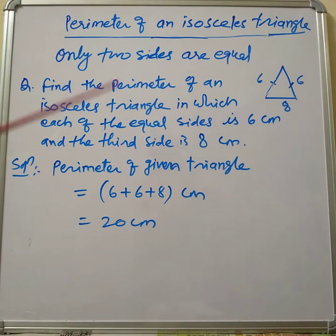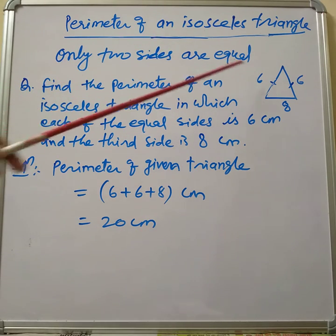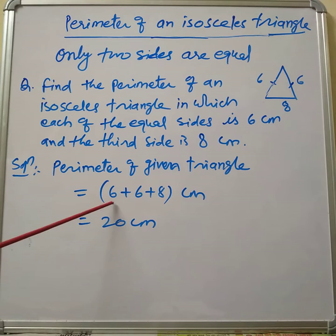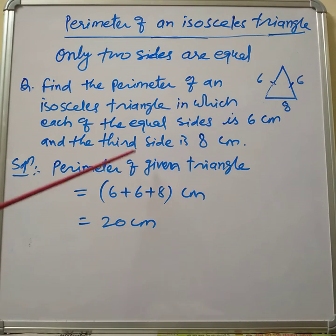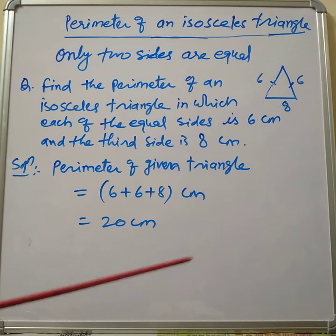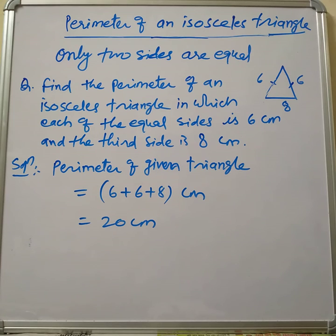In rectilinear figures, the perimeter is the sum of all sides. So in an isosceles triangle there are three sides, two of which are equal. We add six plus six plus eight, which is twenty centimeters. So the perimeter of this isosceles triangle is twenty centimeters. Practice more examples to master how to calculate the perimeter of an isosceles triangle. If you have any queries, you can comment in the comment box. Enjoy learning!